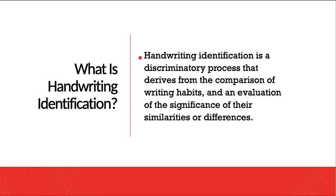Handwriting identification is a discriminatory process. Discriminatory process means we are basically trying to discriminate a particular person on the basis of characteristics or features present in the handwriting — on the basis of similarities or differences. We study handwriting to answer questions such as: what is the education level of the writer? Were given letters or documents written by one person? Are signatures present on a document genuine or forged?